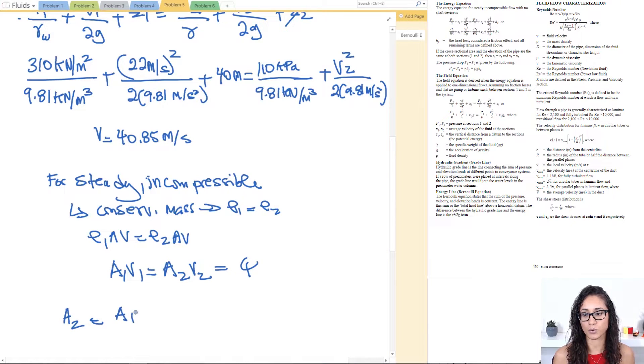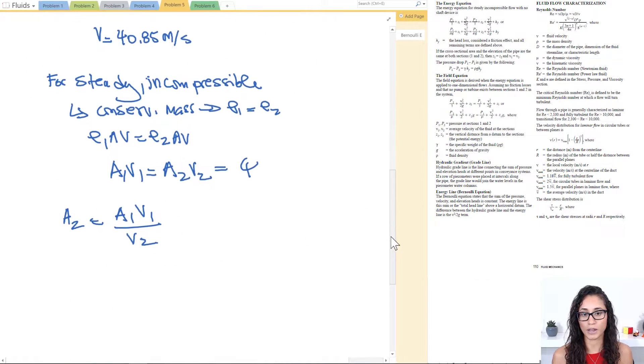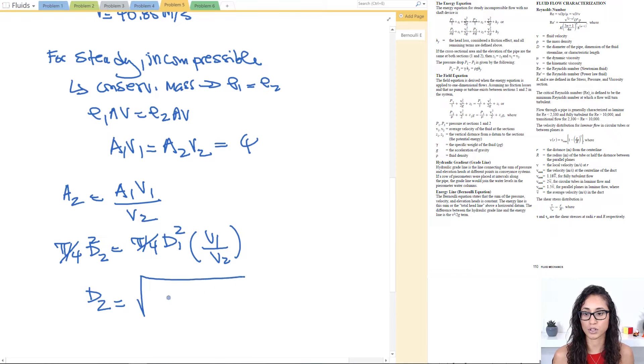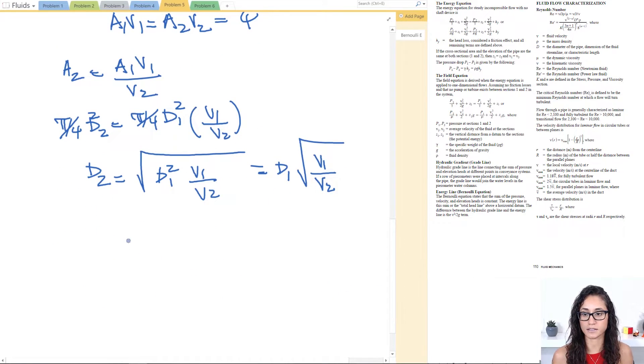A2 equals A1 times V1 divided by V2. Because we have a circular pipe, we're going to use the area of a circle. We have pi over 4 times D2 squared equals pi over 4 times D1 squared times V1 over V2. Pi over 4 cancels with this pi over 4. Now D2 equals the square root of D1 squared times V1 over V2. This can also be equal to D1 times the square root of V1 over V2. Let's plug in the numbers. D1 equals 0.2 meters, square root of V1 equals 22 meters per second and V2 is 40.85 meters per second.